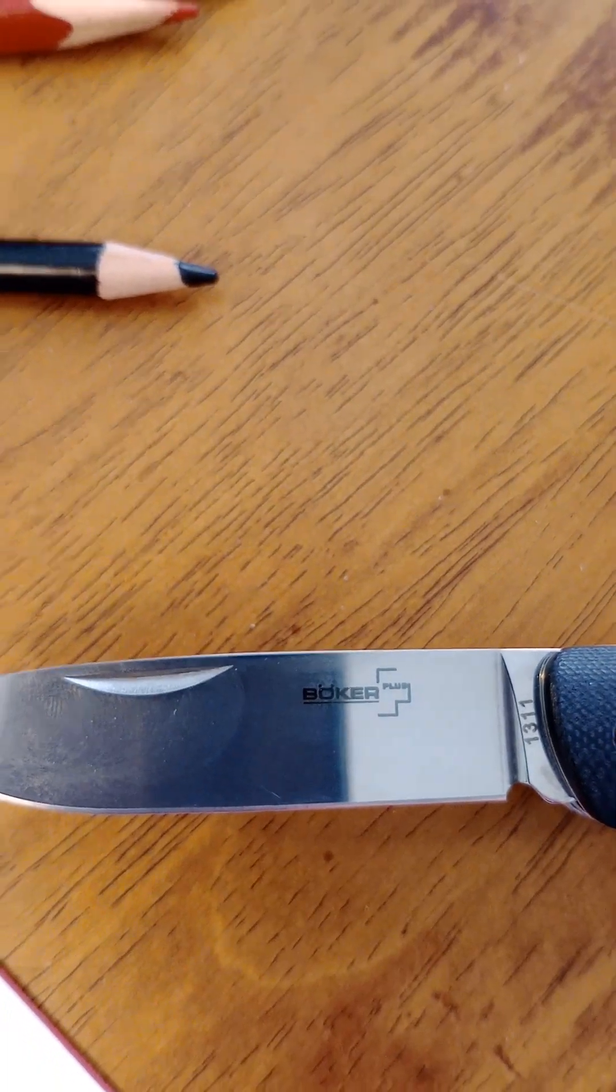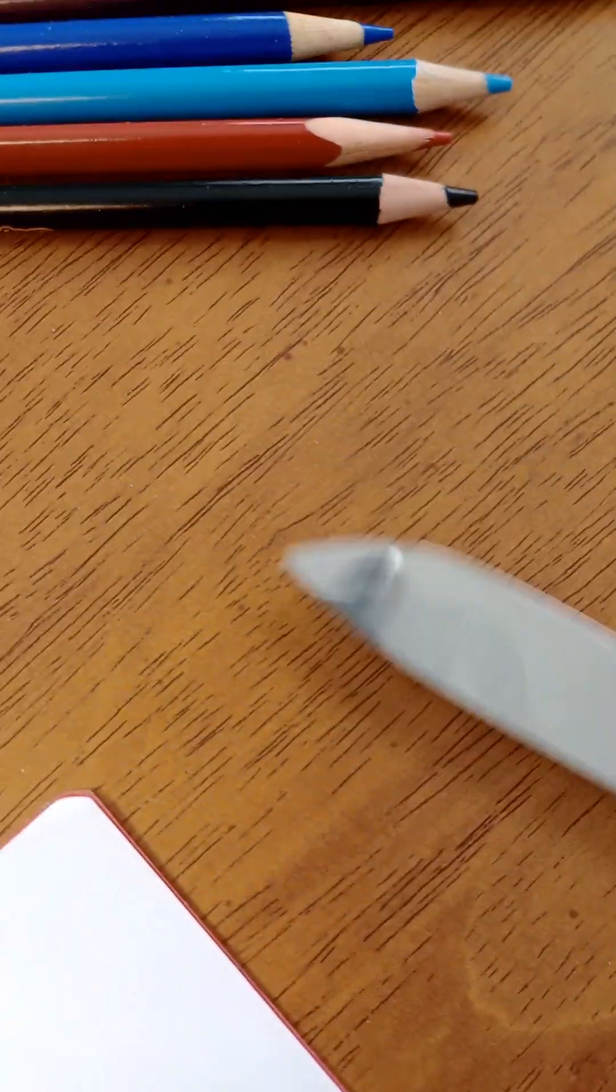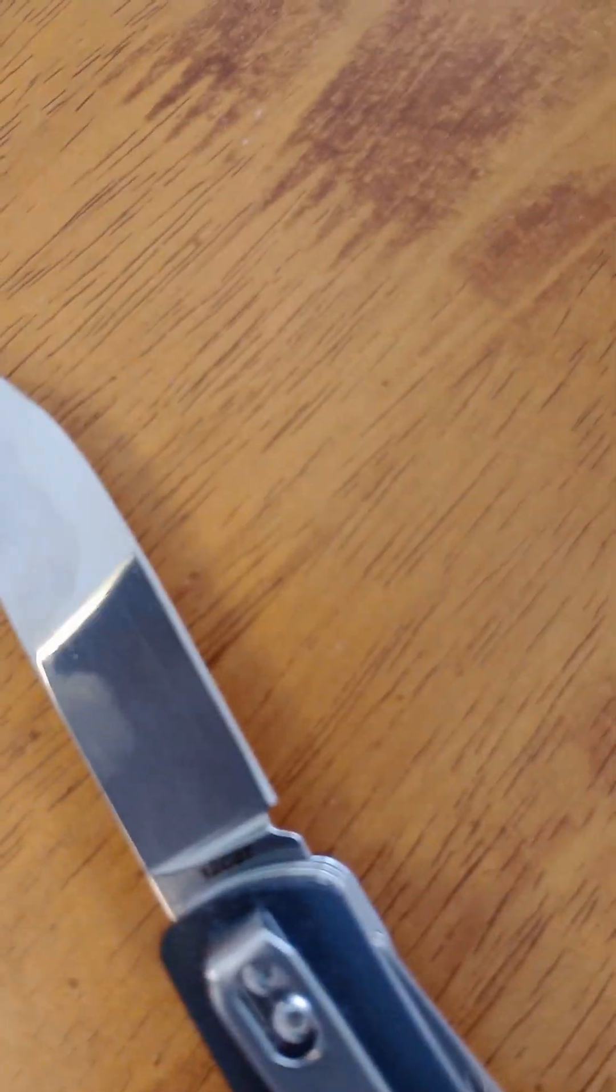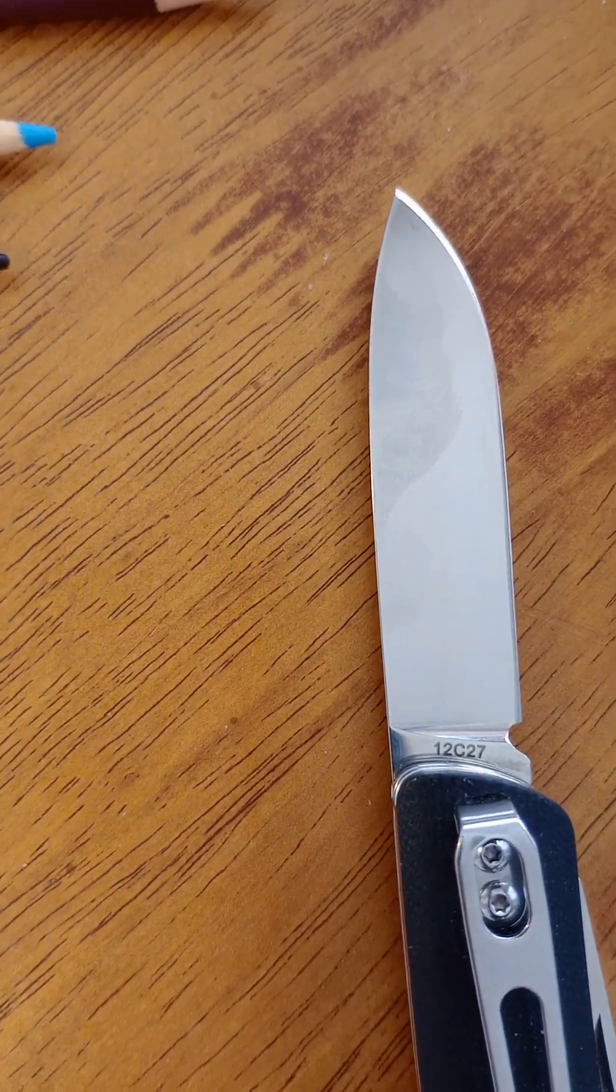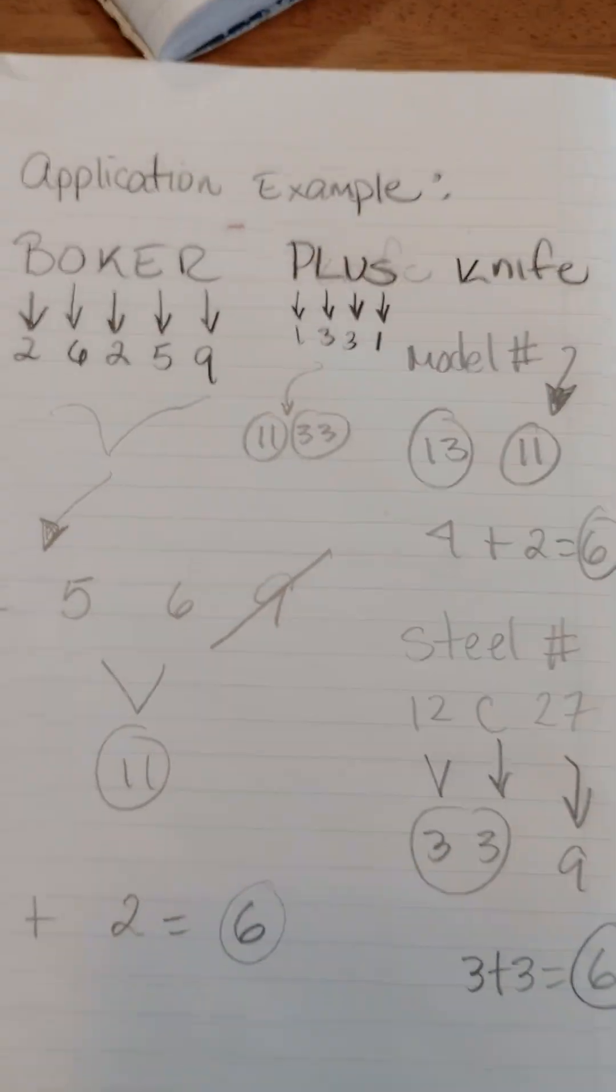The model number is 1311. If you turn this around, the type of steel is going to be very difficult to see, unfortunately. There it is. 12C27.